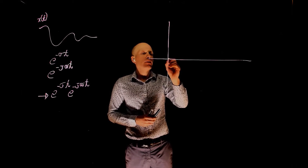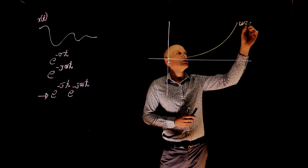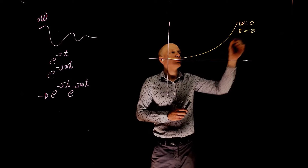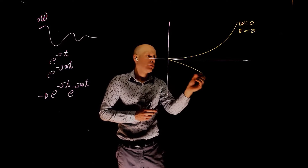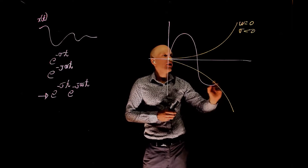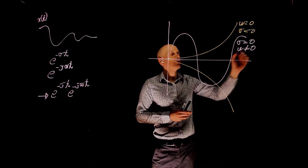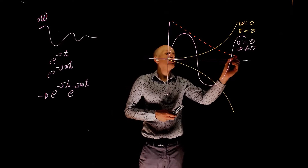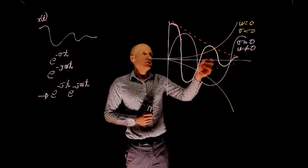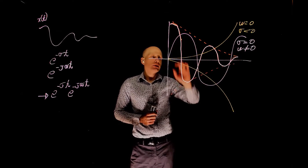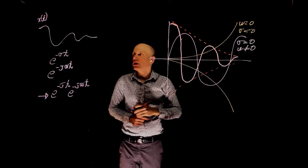We can go from exponential waveforms only — when, for instance, omega is zero and sigma is less than zero — to a sinusoidal waveform when sigma is zero and omega is different from zero, to combinations of them, such as a sinusoidal that decays over time. In that case, sigma and omega are both different from zero.